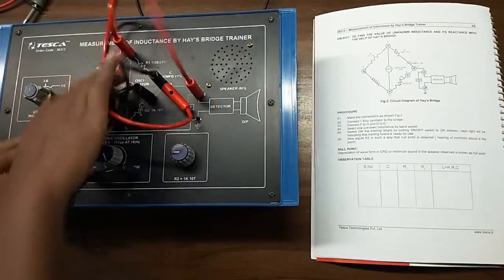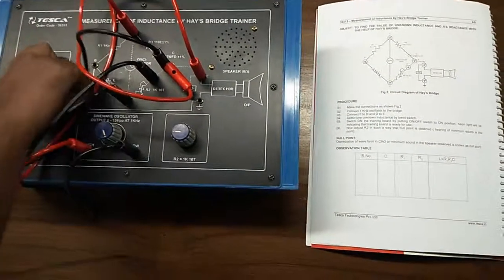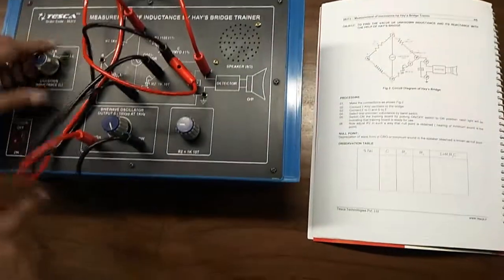Now we will select any unknown inductance by the band switch. I have selected this.